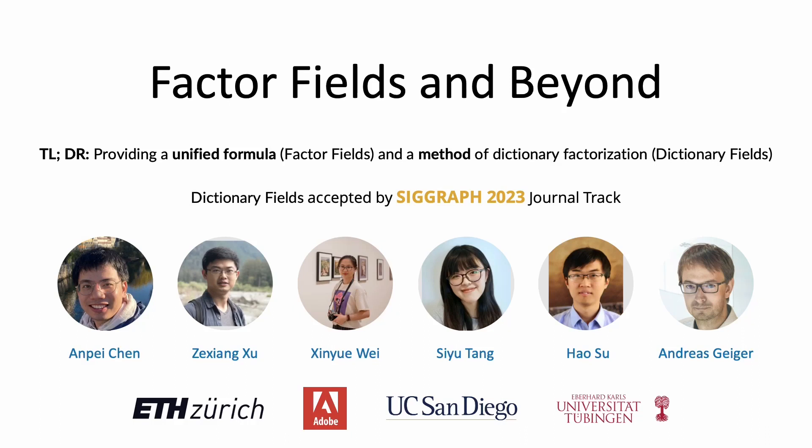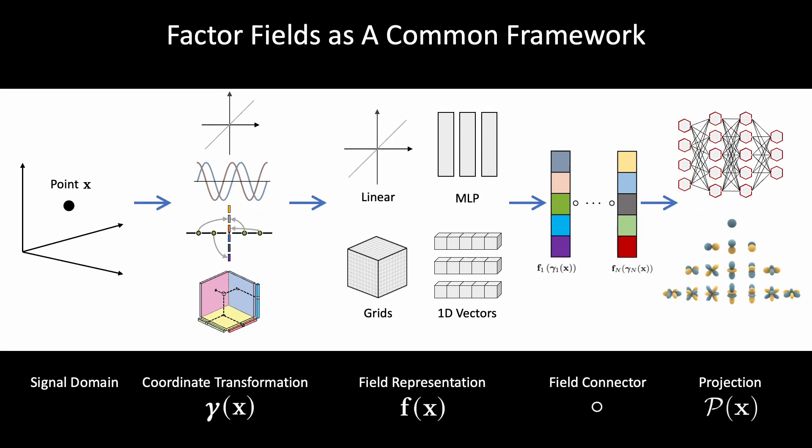We present Factor Fields, a novel framework for modeling and representing signals. Factor Fields decompose a signal into a product of factors, each represented by a classical or neural field representation which operates on transformed input coordinates.